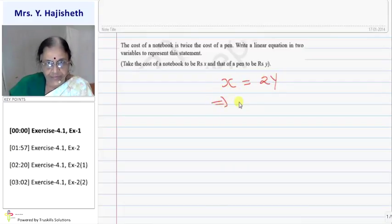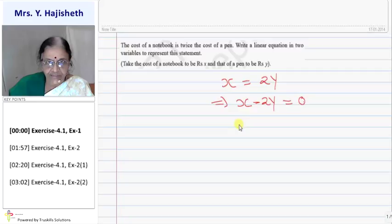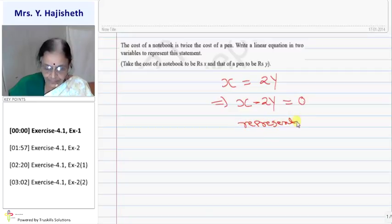This is the relation between the cost of notebook and pen. I get it in standard form, so I can write x minus two y equals zero. This represents a linear equation.